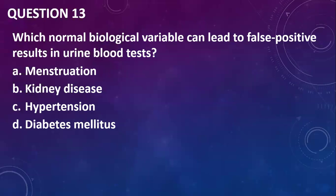Question thirteen: which normal biological variable can lead to false positive results in urine blood tests? Usually if a lady is menstruating, you may find some traces of blood in the urine. So I'll go with that — menstruation.